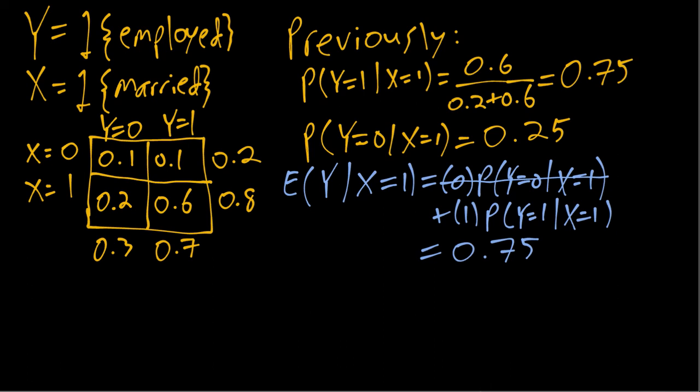This video considers the conditional mean function for one of the examples we looked at in previous videos. This was the example where Y and X are both binary variables. Previously we computed the conditional mean of Y given X equals one, and now we're going to think about the conditional mean function, or CMF.